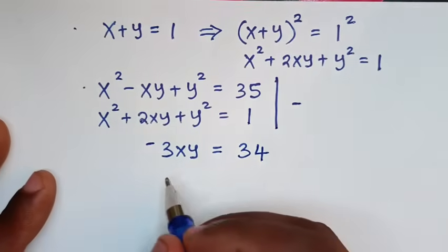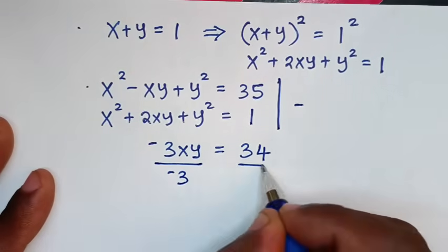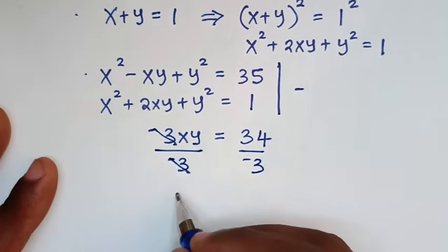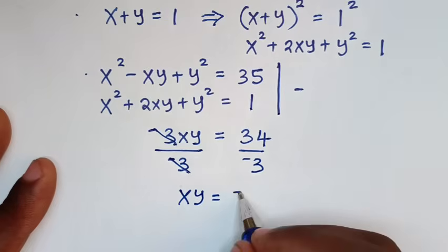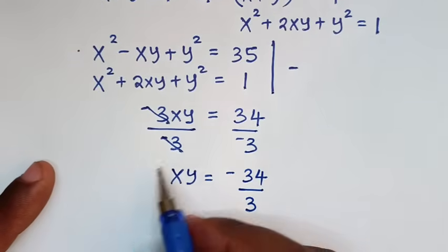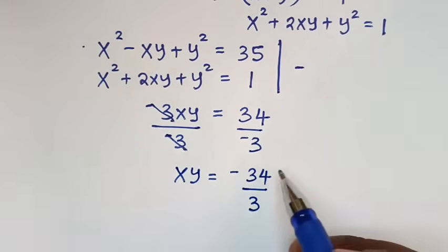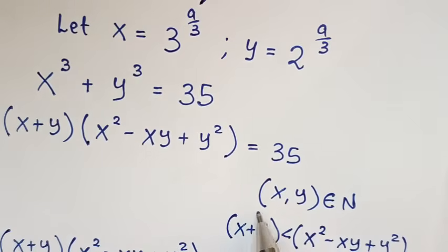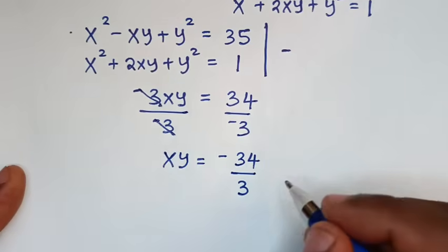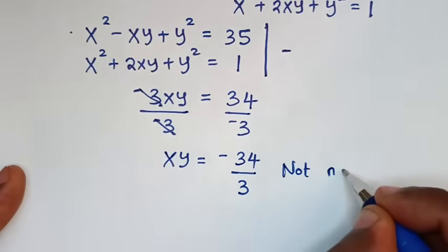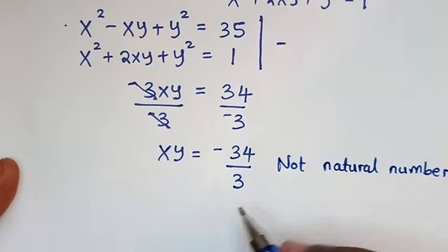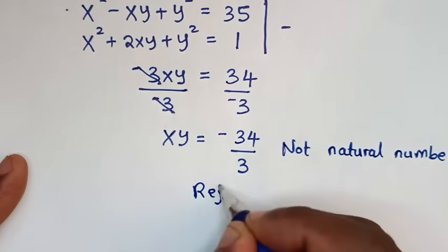Then we divide by negative 3 on both sides. This negative 3 cancels, then it will be xy is equal to negative 34 over 3. Now xy is negative 34 over 3. Note our condition: x comma y is element of a natural number. This fraction is not a natural number, so this solution in the first case is rejected.